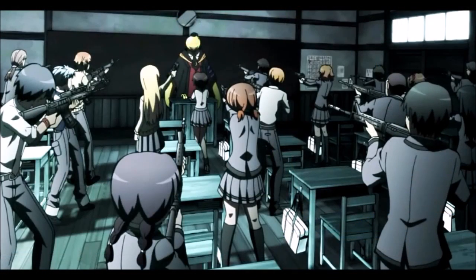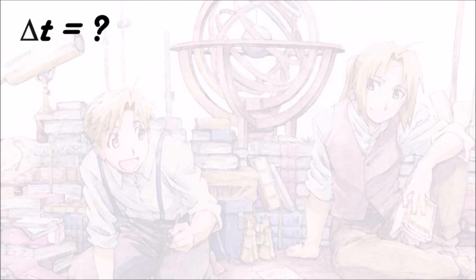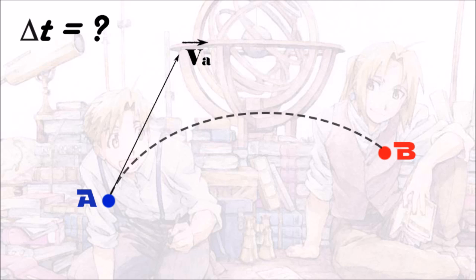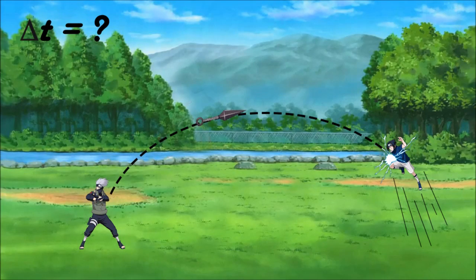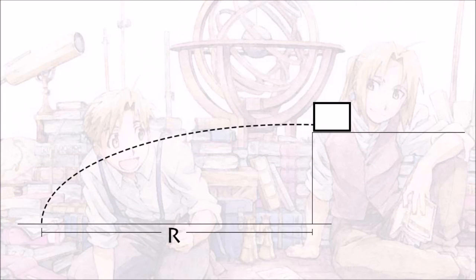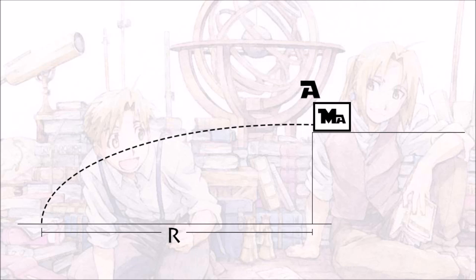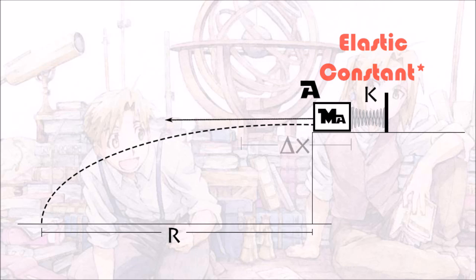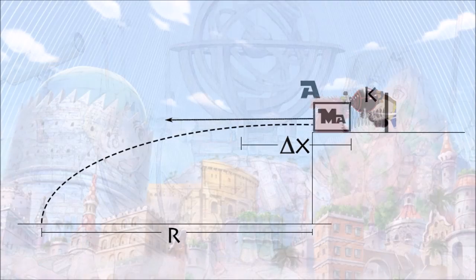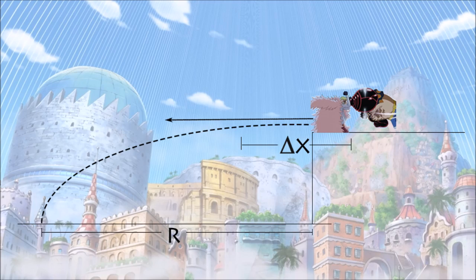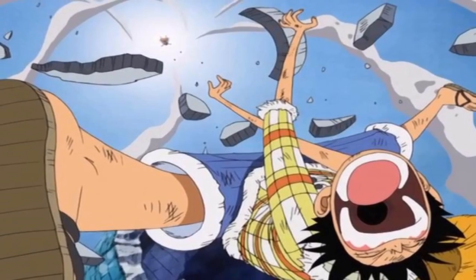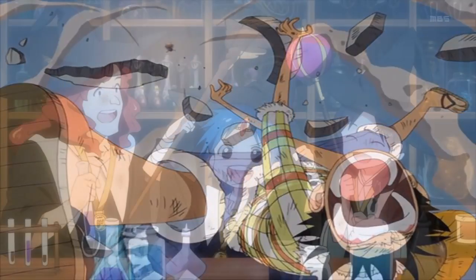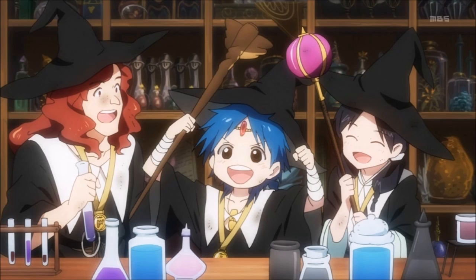I've already created multiple exercises during class using anime in general. In the first approach, why should I make a high school student calculate the time interval T it will take for a particle A with initial velocity VA to reach a point B in a two-dimensional movement under the action of G, when I can instead make them calculate how long it will take for Kakashi's kunai to reach Sasuke? In another approach, why should I make them calculate the range of a block of mass MA after it was pulled by a spring with elastic constant K that was initially compressed X meters, if instead I can make them calculate how far Luffy sent Flamingo with his Gear 4? It's not only funnier this way, but if it can increase a student's interest or love of physics and science in general, I think it's a pretty nice thing to do.